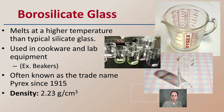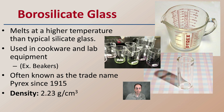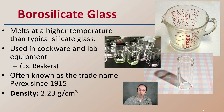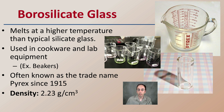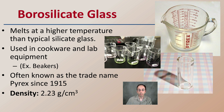Then we have borosilicate glass. This melts at a higher temperature than typical silicate glass, so it's used in cookware and lab equipment such as beakers, where high heat tends to be involved. It's also known by its trade name Pyrex since 1915, and that's what a lot of the beakers here are made of — or even this measuring cup here, where we see Pyrex listed right in the center.